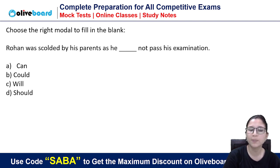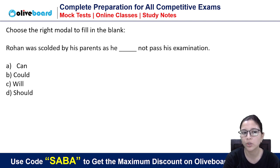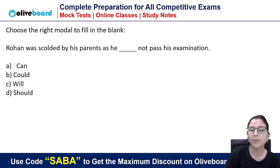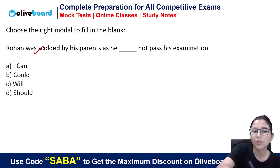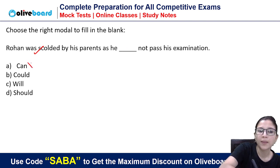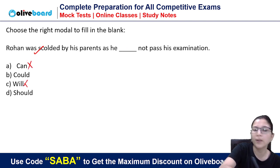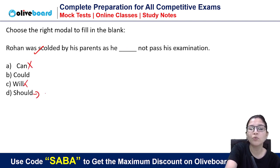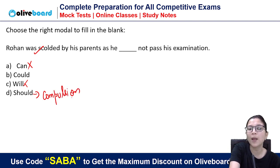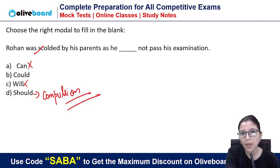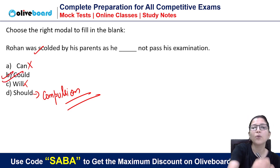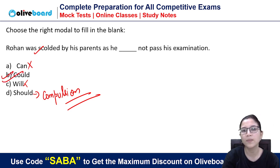Next: 'Rohan was scolded by his parents as he does not pass his examination.' Again, this is past tense, so we need a past form. 'Should' is basically used for compulsion. Here we are talking about ability, so the correct answer is: 'he could not pass his examination.'